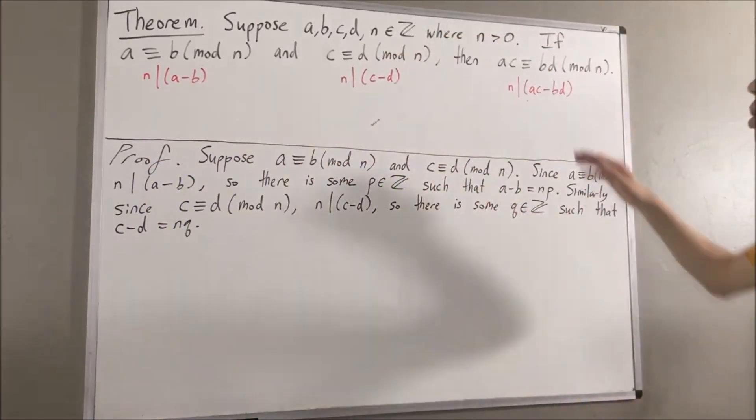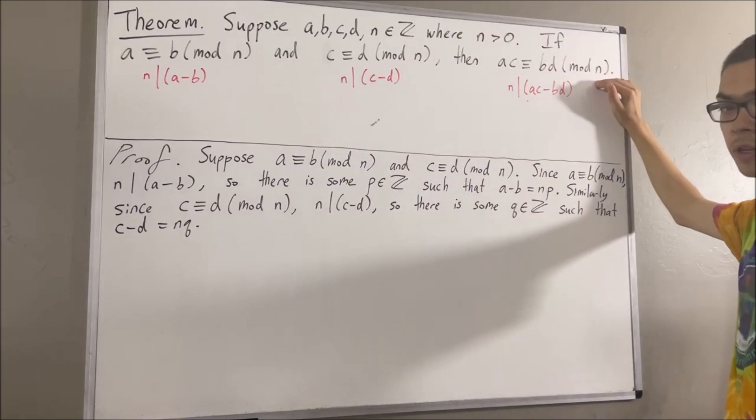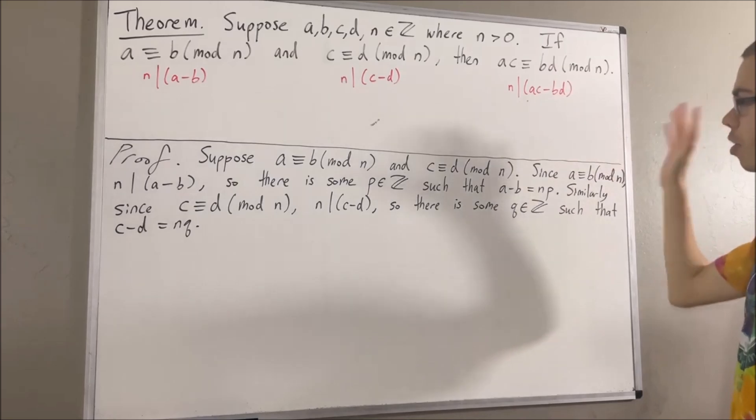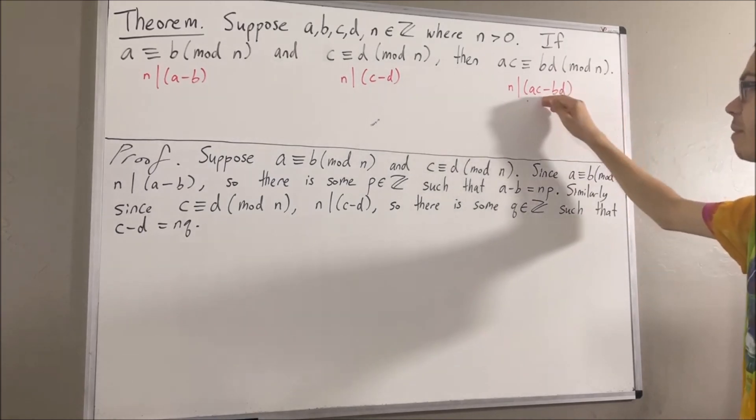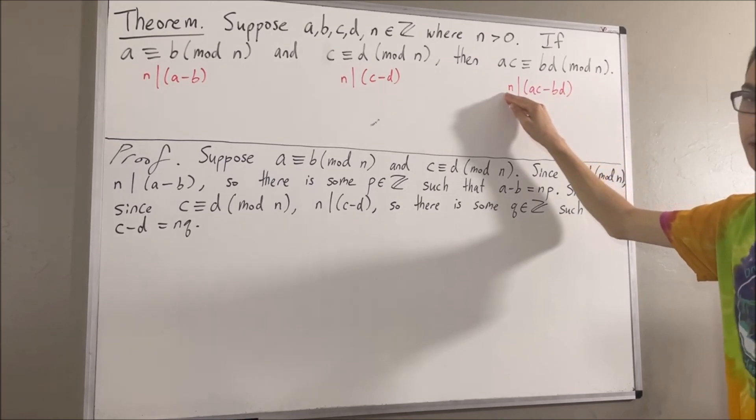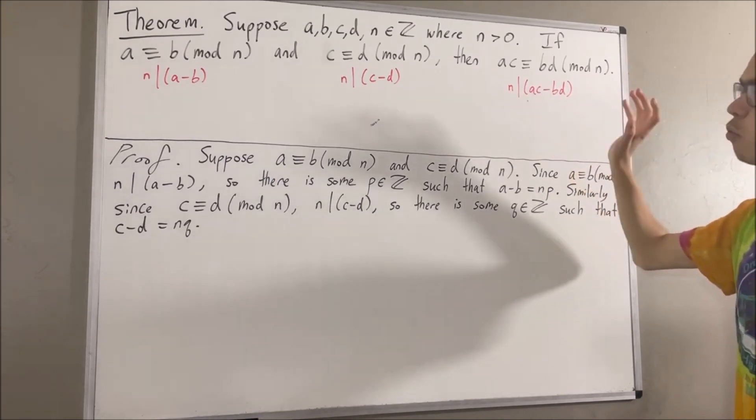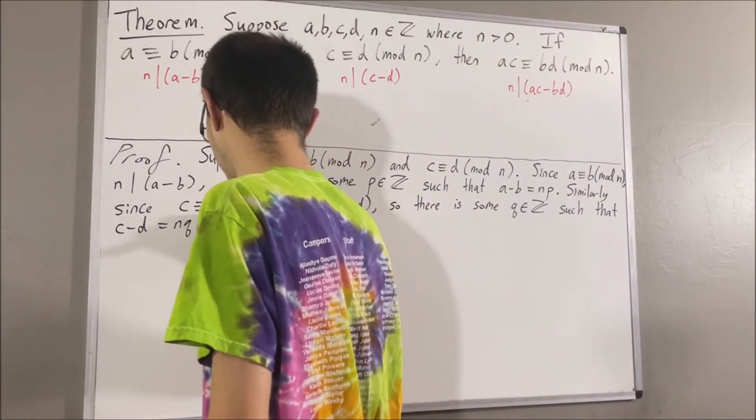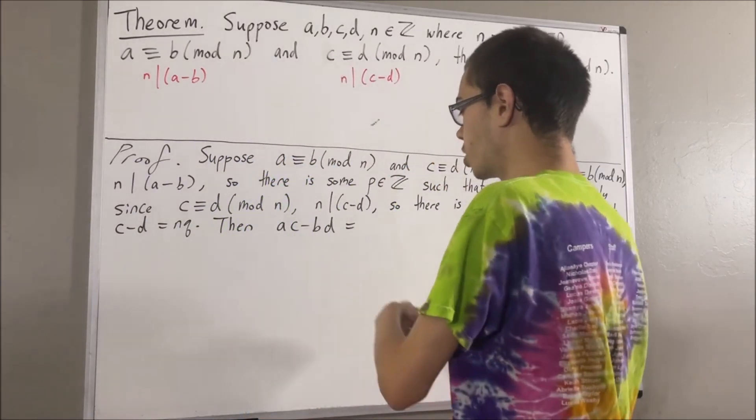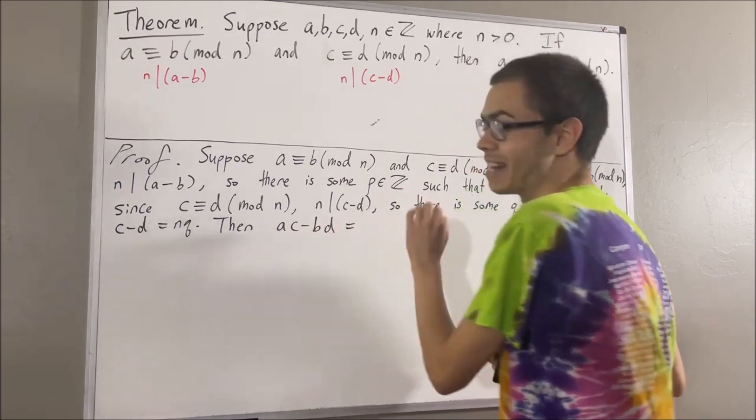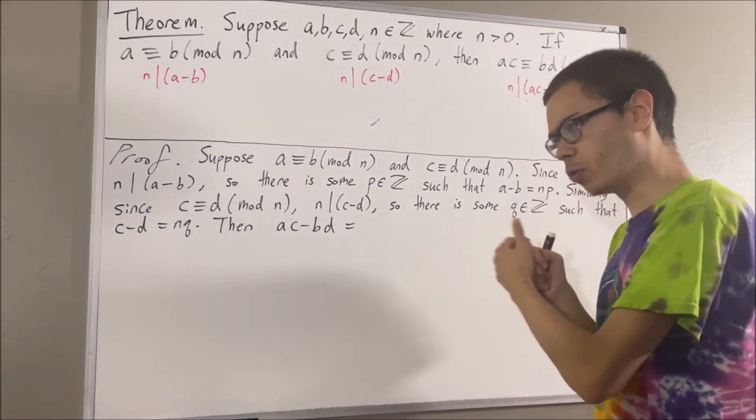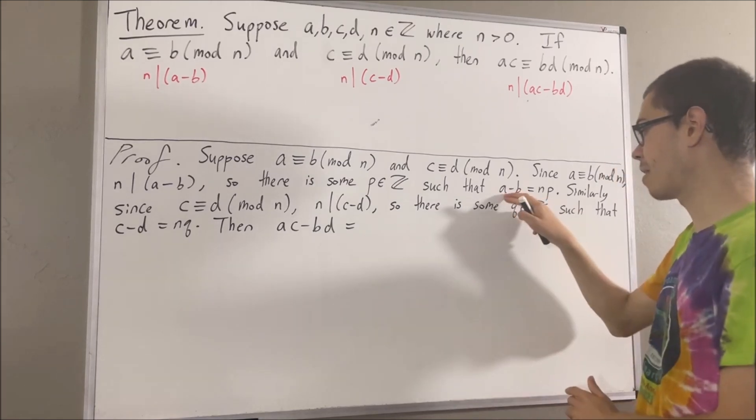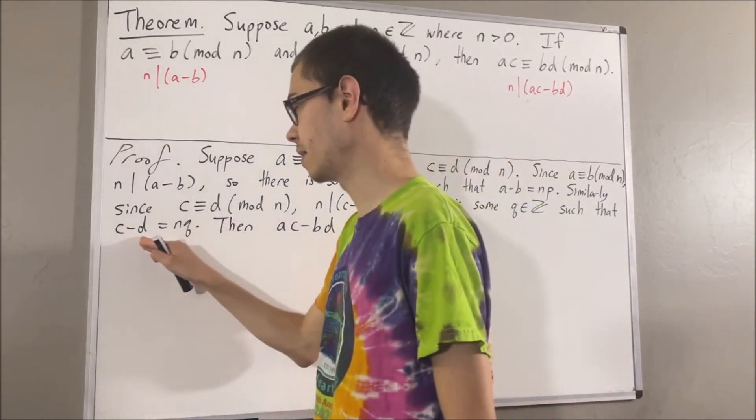The whole goal has been to show that ac is congruent to bd modulo n, which means we want to show that n divides ac minus bd, which means we want to find an integer such that ac minus bd is equal to n times that integer. And to see what that integer is, let me start out by writing ac minus bd. We want to express ac minus bd as n times some integer. How can we do that?